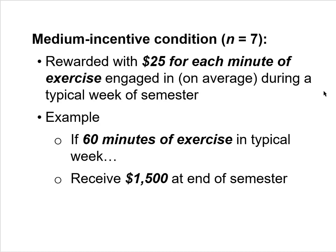Another seven participants are assigned to the medium incentive condition. Participants in this condition are told they'll be rewarded with $25 for each minute of exercise they engage in on average during a typical week. For example, if a subject engages in 60 minutes of exercise per week, they'll receive $1,500 at the end of the semester — a bit more attractive.